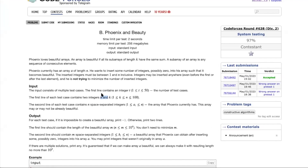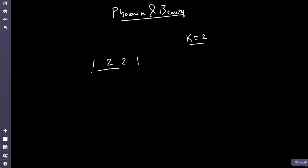So what does the problem state? We'll be given t test cases, an array of size n, and a number k. What you have to do exactly is: every subarray of size k should have equal sum.